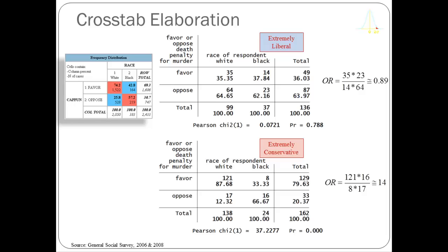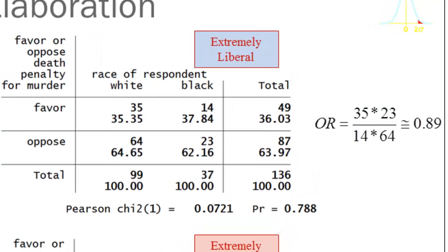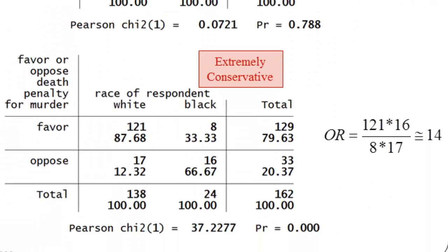Looking at the table, I've pulled out all people who said they were extremely liberal and created the same cross-tabulation of race by attitudes on capital punishment, then calculated the odds ratio. Remember, an odds ratio of 1 would indicate the same rate of approval for black and white respondents. In fact, this odds ratio shows that blacks favor capital punishment more frequently than whites among those who are extremely liberal.